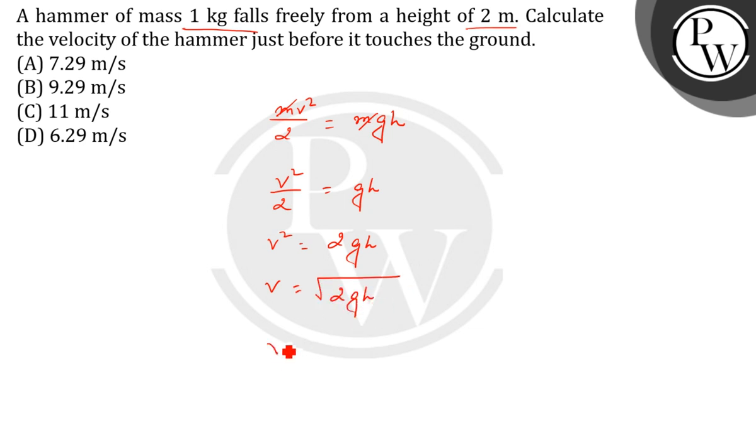Now we will put the values here. V equals square root of 2 into the value of g is 10 into height is 2 meters. So V is equal to square root of 40, which equals 6.29.